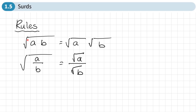Let's go through the rules first. The rule for products: if you're multiplying two things together and finding the square root of those, you can split that up into the square root of the first part times the square root of the second part. The next rule applies to quotients or fractions: if you're finding the square root of a fraction, it's the square root of the numerator over the square root of the denominator.